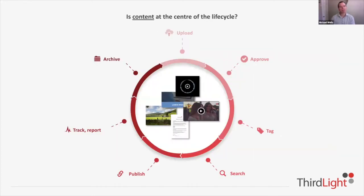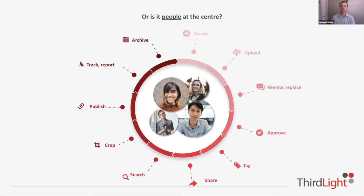In a normal digital asset management discussion there's usually an idea that an asset has a lifecycle: you upload it, there may be some approvals, you tag it so it's searchable, then you use it by publishing or sharing it, track it, report on it, and eventually archive it. But there's an argument that this isn't quite right because it puts files in the middle of everything. An alternative view is that people are at the center, and it's their requirements that should drive the whole lifecycle of everything in marketing.